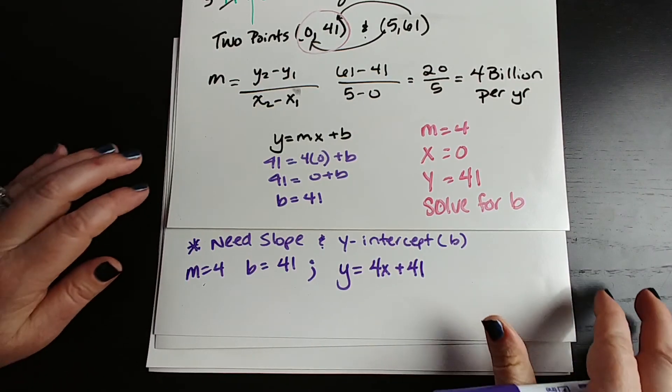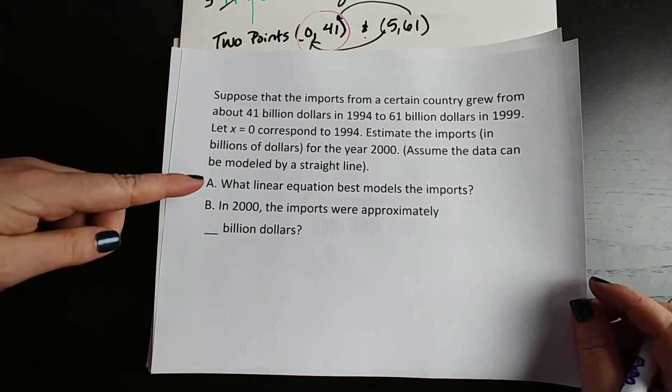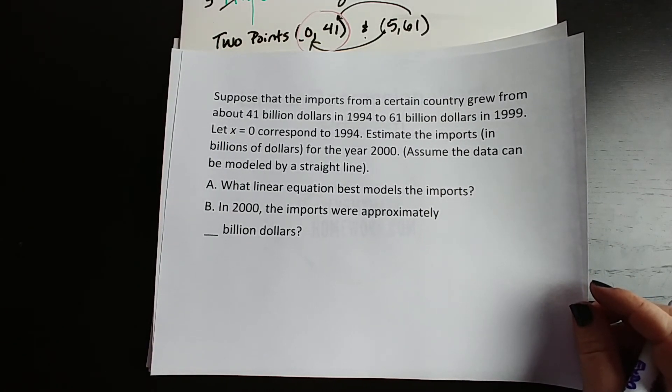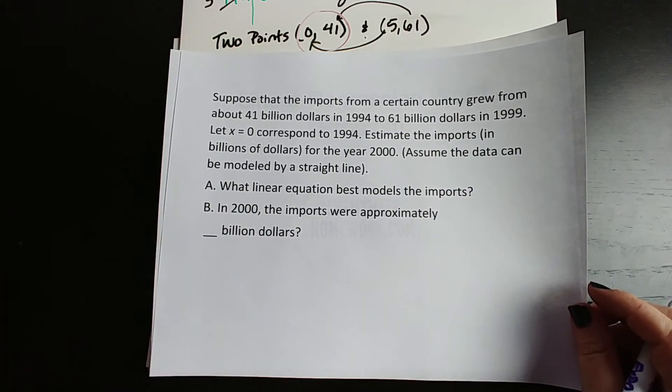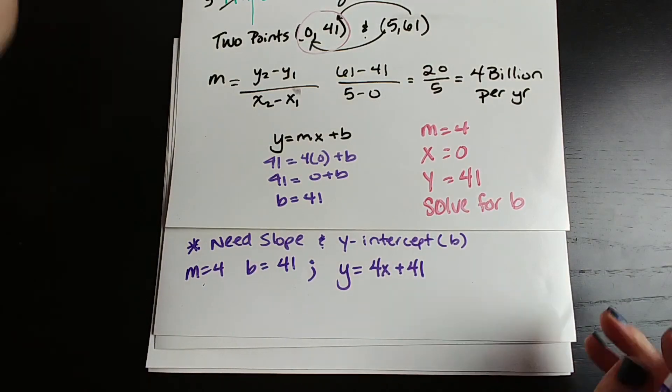So now it asked us, if we go back to our original problem, we've solved for A, what linear equation best models it? We have it, 4x plus 41. It wants to know in the year 2000, what were the imports? How many billions of dollars? We already talked about this. We talked about how the year 2000, x was going to be 6, so we're going to plug in 6.